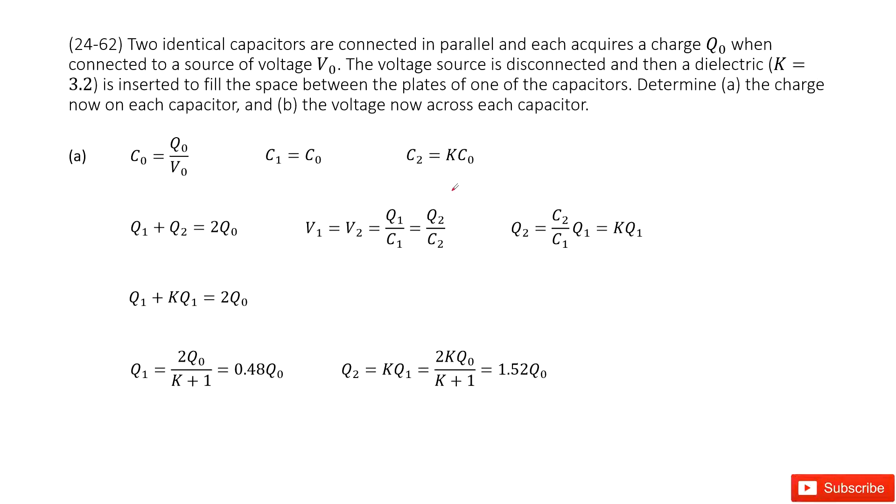There we have two identical capacitors. It tells us when connected to a voltage source V₀, it will get the charge Q₀. So from this sentence, we can calculate the capacitance for the capacitor. We think of it as C₀, using the charge Q₀ divided by V₀.